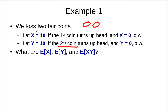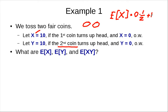So these two random variables are essentially independent. What's the expected value of X, expected value of Y, and the expected value of the product? For the expected value of X, it's going to be 0 with probability one half, and 10 with probability one half, so the expected value of X is 5. Similarly, the expected value of Y is also 5.